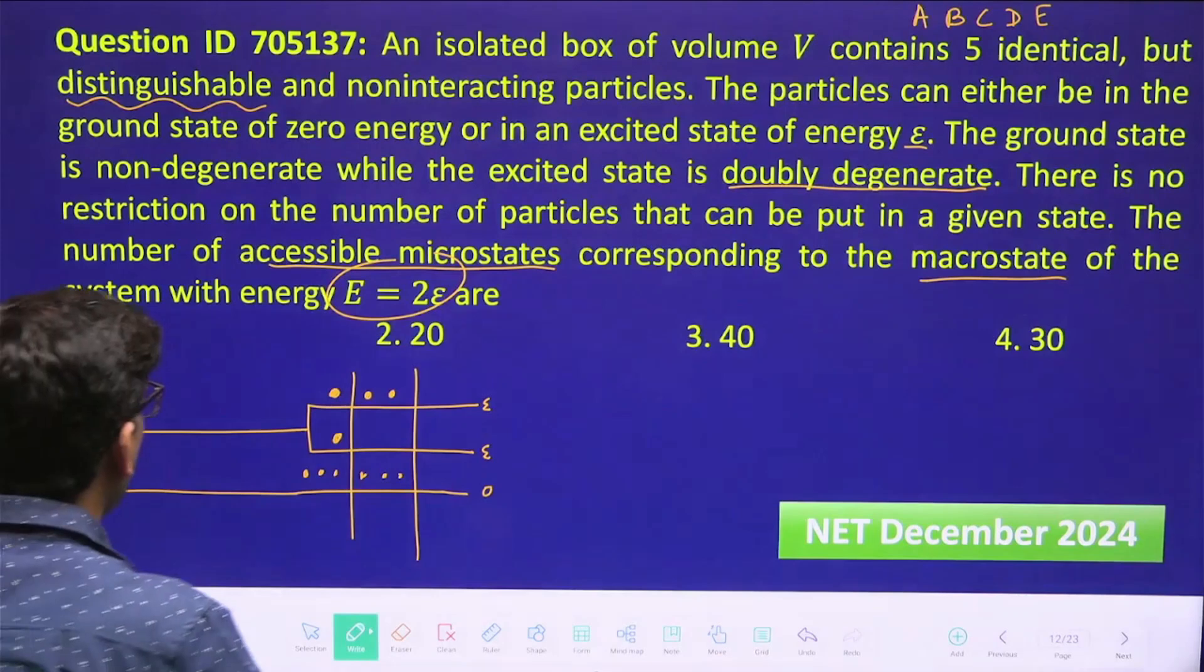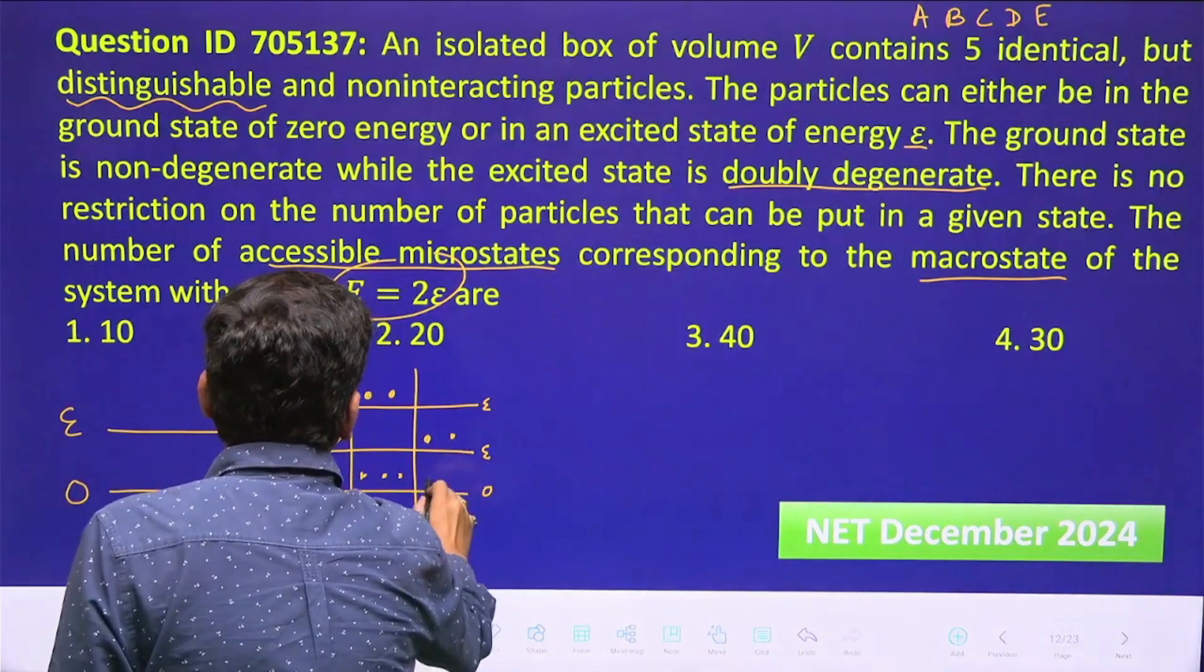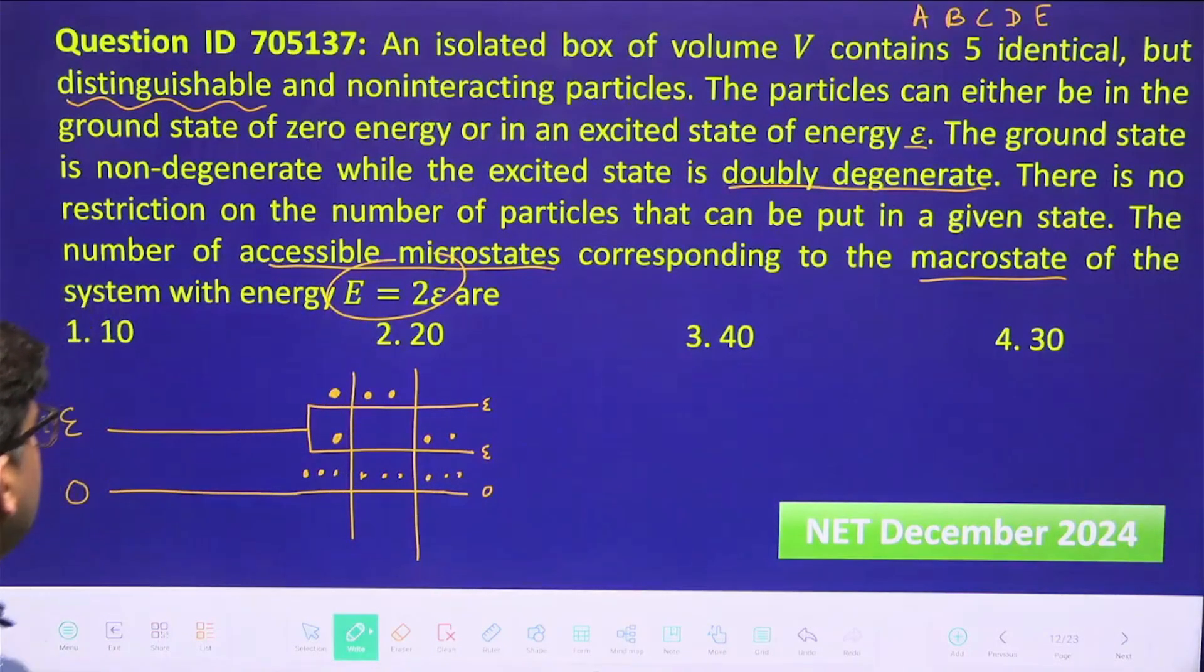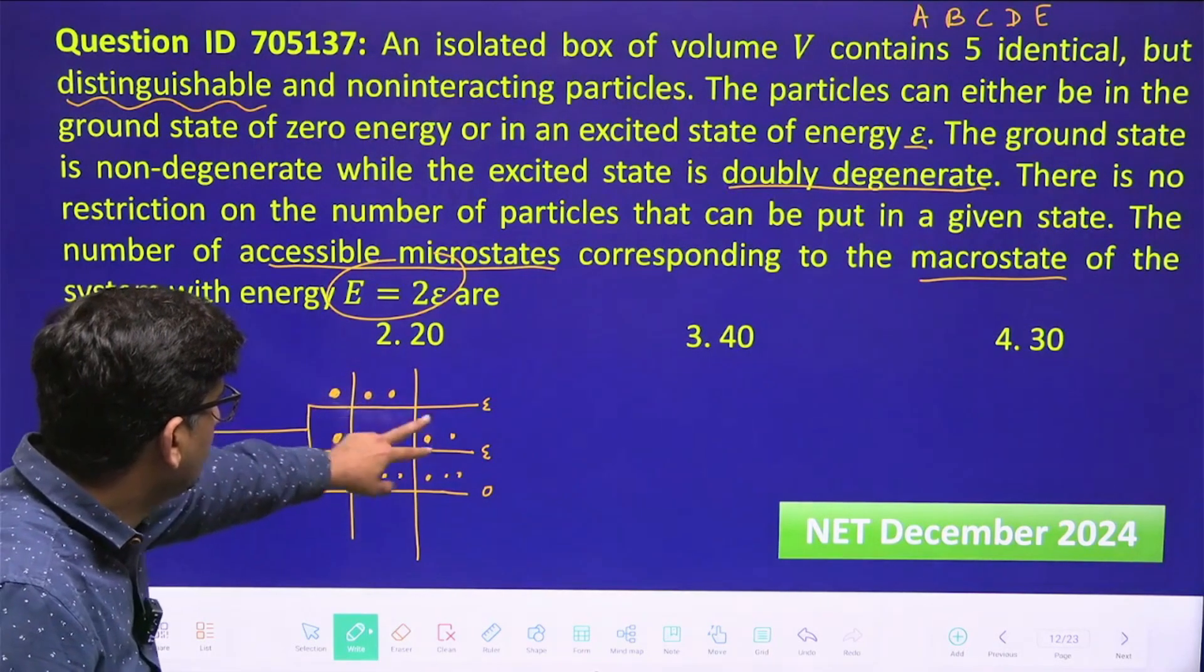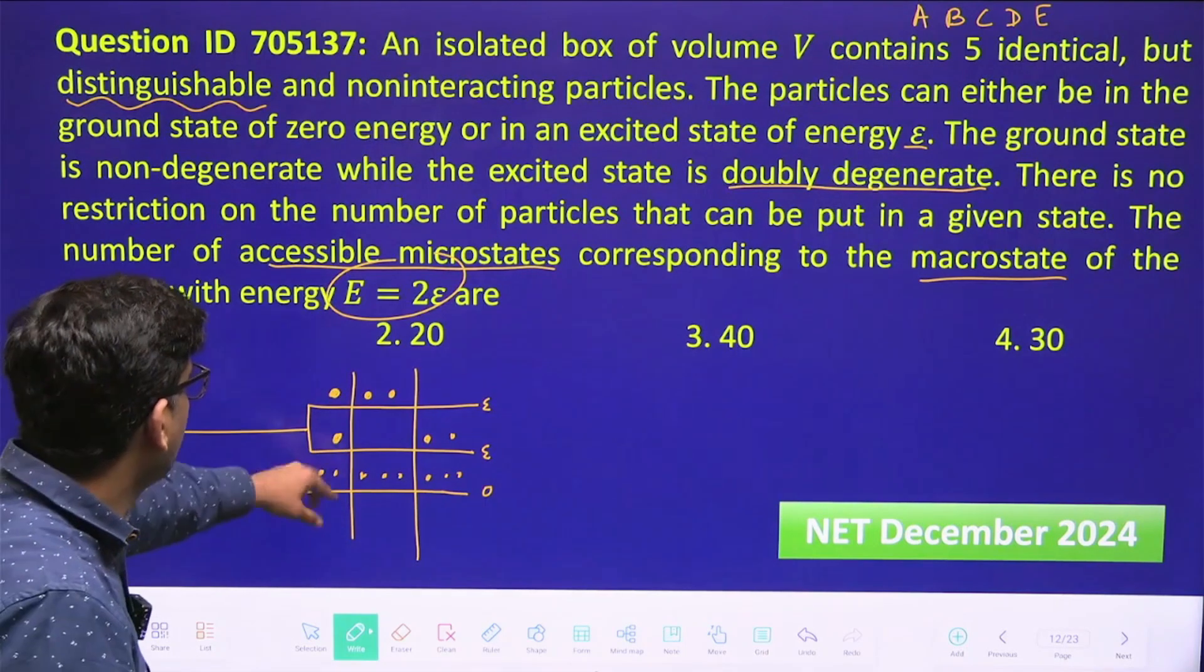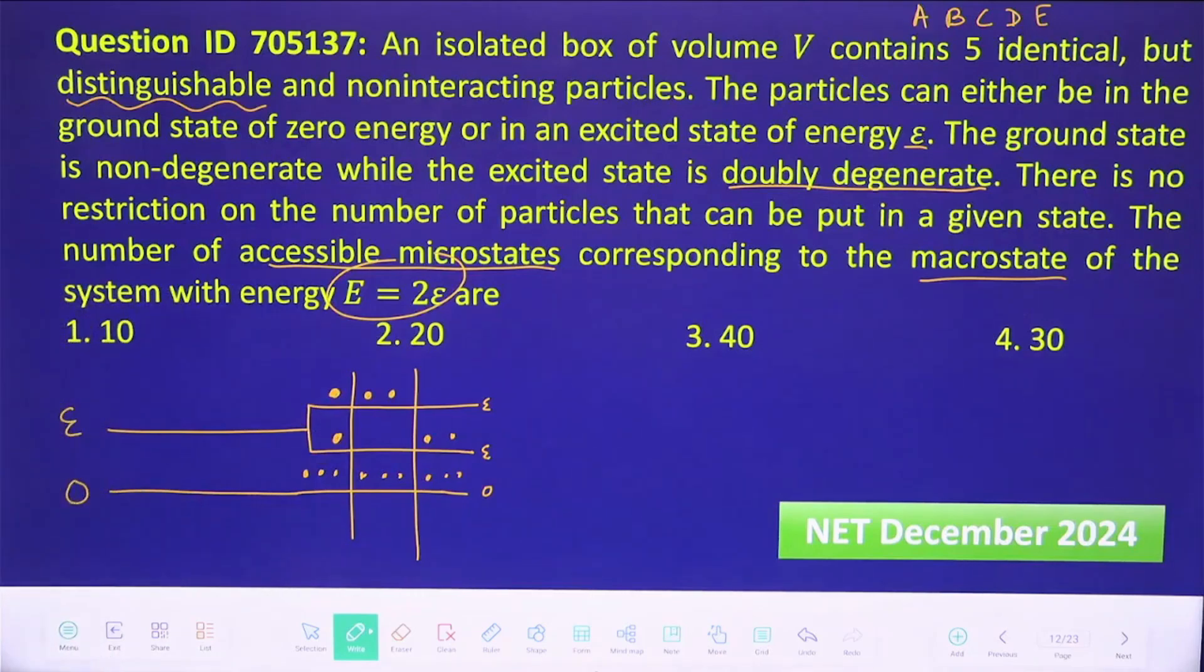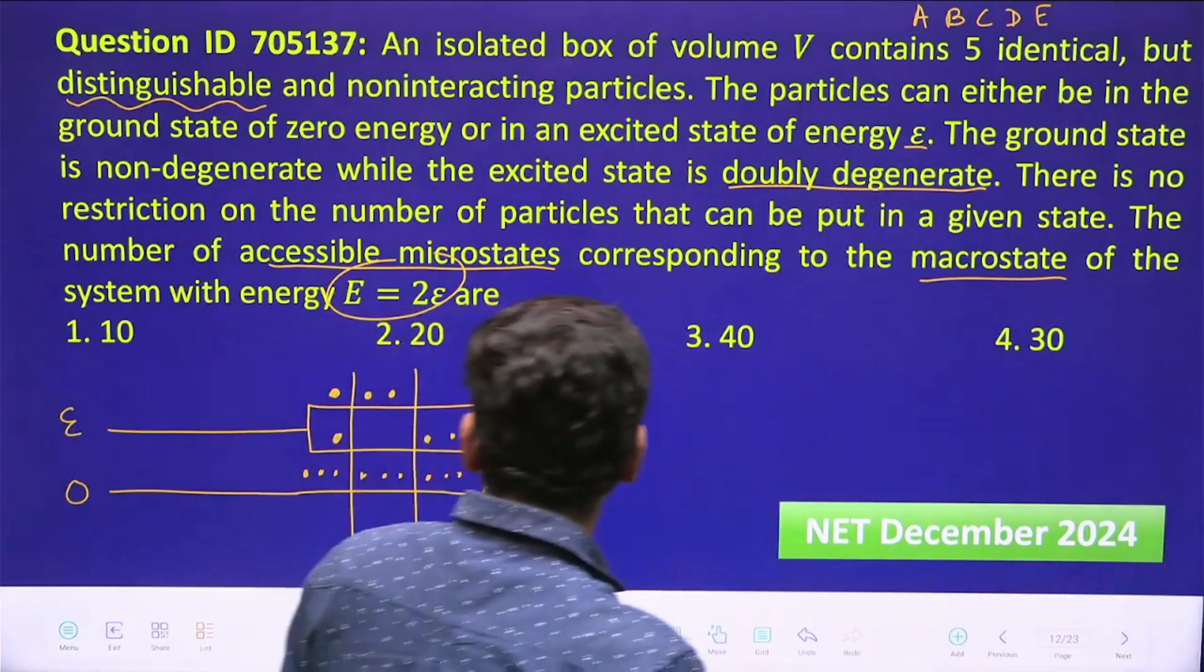And then two particles are here and three particles are here. So only these are the cases when you have total energy 2e. Just count: 2e energy, 2e energy, 2e energy. Rest of them I have put in the ground state. So we have to tell what are the total number of microstates. Because these are distinguishable, if it is A, this is B—B, A will form a different microstate. So let us count this. I will count it like this.